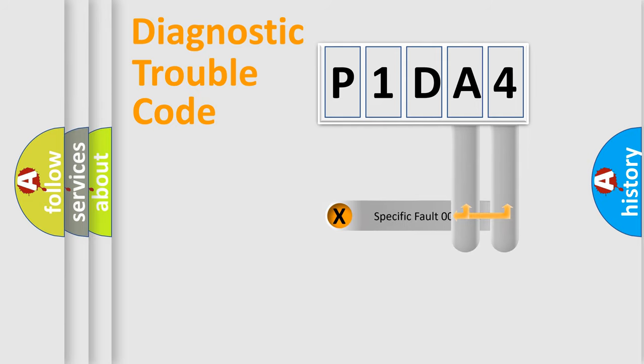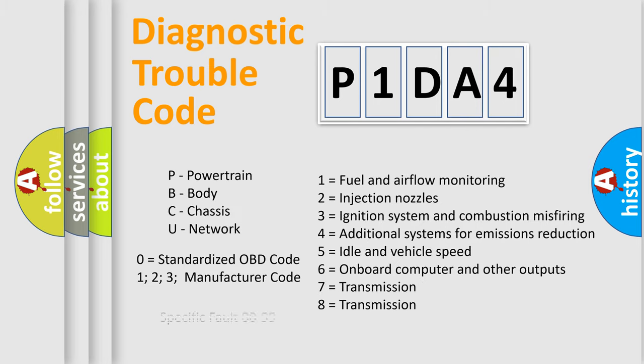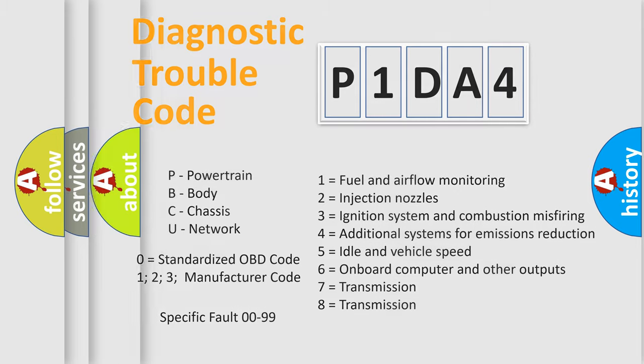Only the last two characters define the specific fault of the group. Let's not forget that such a division is valid only if the second character of the code is expressed by the number zero.